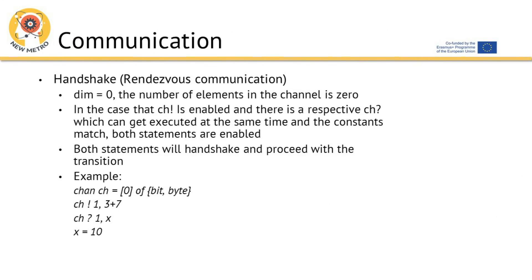For Rendezvous communication, dim equals 0, meaning the number of elements in the channel is 0. In the case that a send on channel ch is enabled and there is a respective receive on ch which can be executed at the same time and the constants match, both statements are enabled. Both statements will handshake and proceed with the transition.